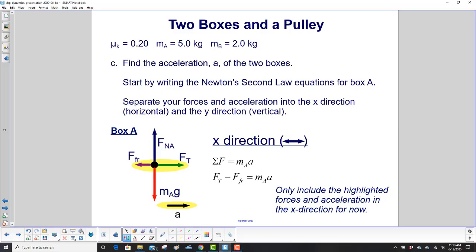Now, we'll write Newton's second law equations for box A. In the x direction, here's my sum of the forces in the x direction. We have tension force to the right, so that's positive. Friction force is negative to the left. And our acceleration is to right, so that's positive.